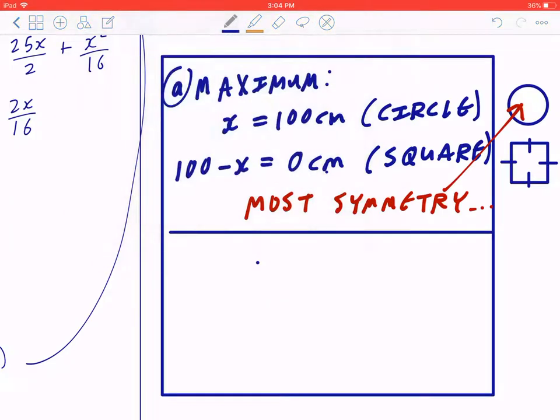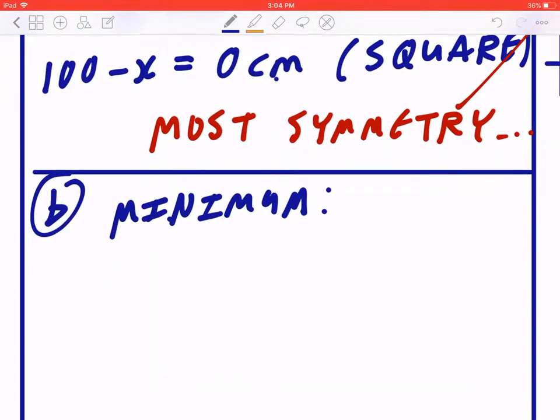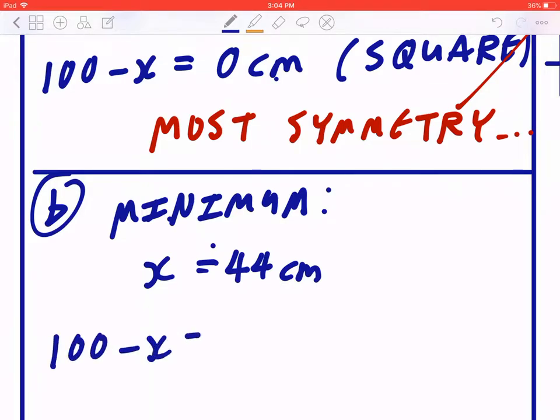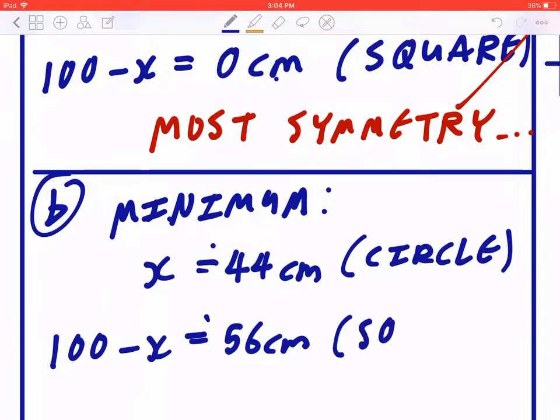Now, in part B, you can find the minimum when x is approximately 44 centimeters, and 100 minus x is 56 centimeters when it's formed into a circle and a square, respectively.